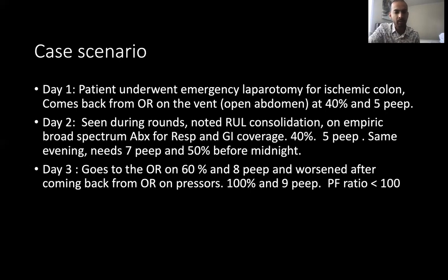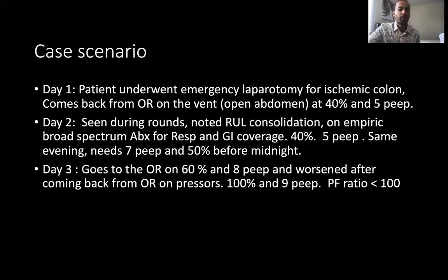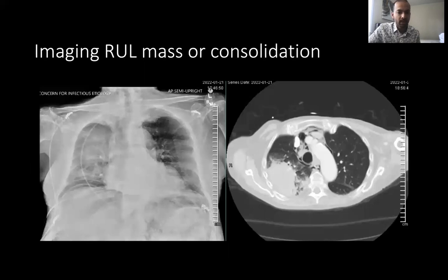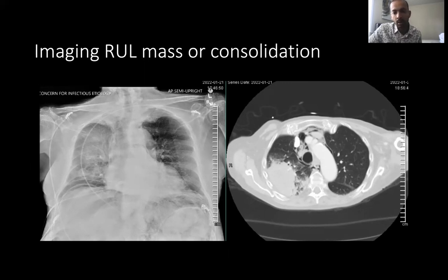The same evening, the hospitalists are managing the patient and the RT manages vent settings. The patient starts needing 7 of PEEP and 50% FiO2 before midnight. On day three, early morning, the patient goes to the OR on 60% FiO2 and 8 of PEEP, then worsens after coming back on pressors — now on 100% FiO2 and 9 of PEEP. PF ratio is 100. There are also chest X-ray and CT scan findings showing the mass, pneumoperitoneum, and pneumomediastinum.